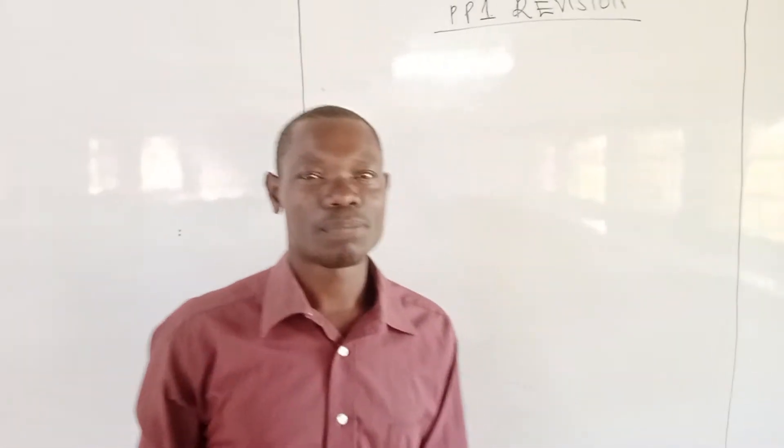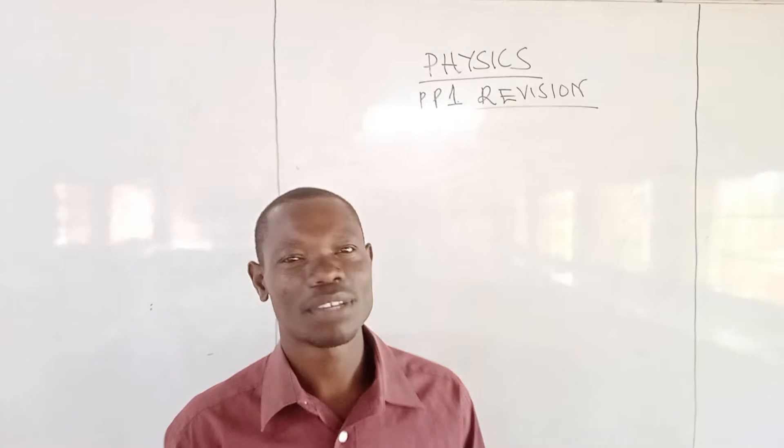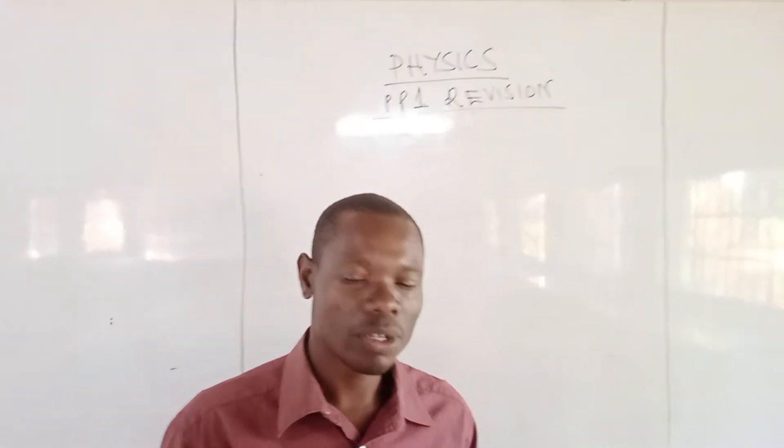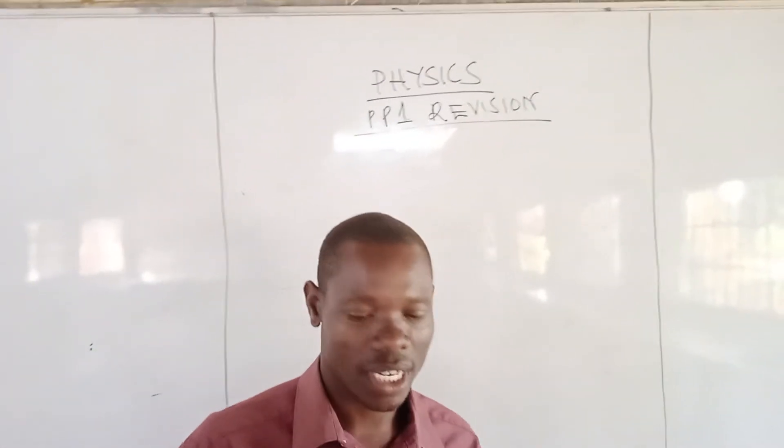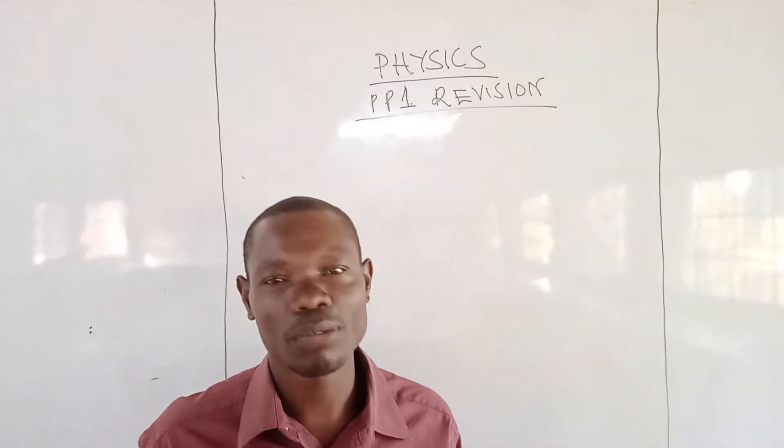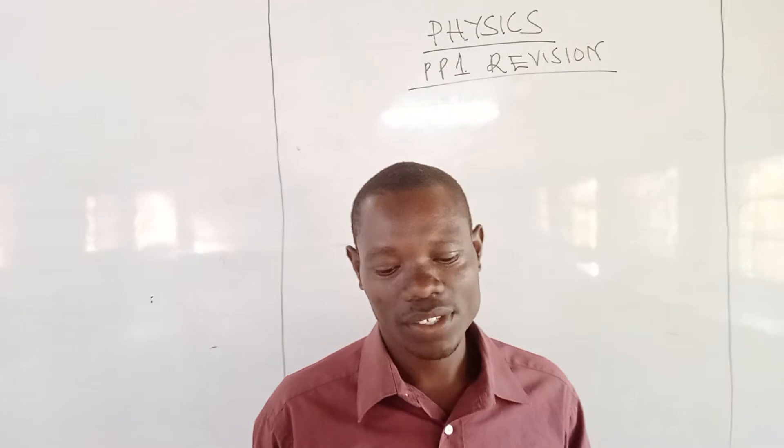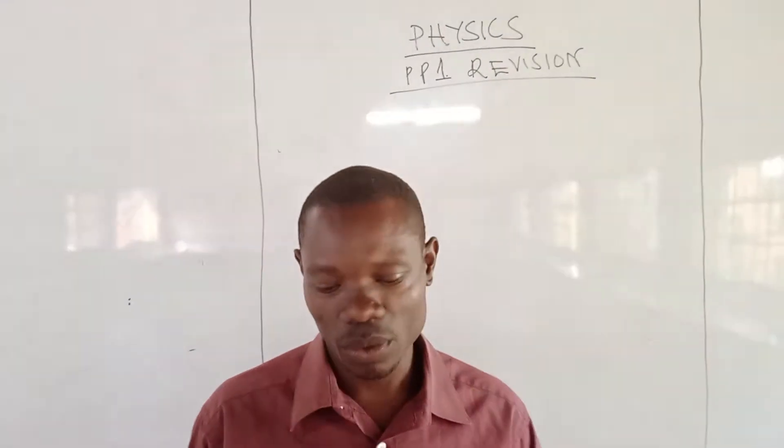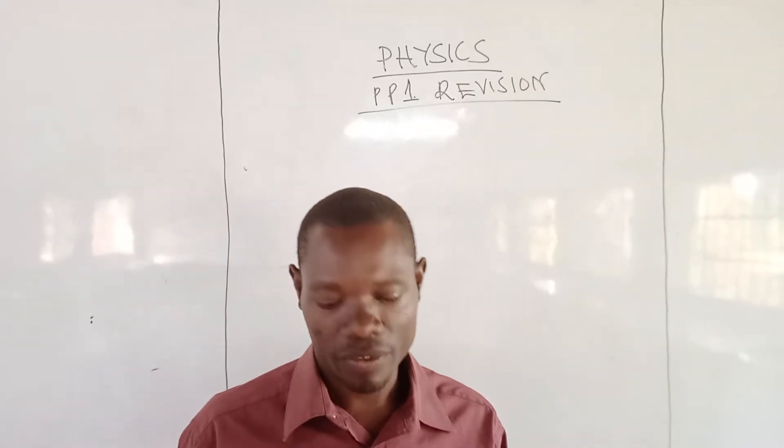Okay, welcome to Physics Chapter 1 revision with me, Mr. So. We'll be doing it one question at a time. Our first question is on a micrometer screw gauge, whereby we are asked to draw a micrometer screw gauge with a reading of 5.56 millimeters.